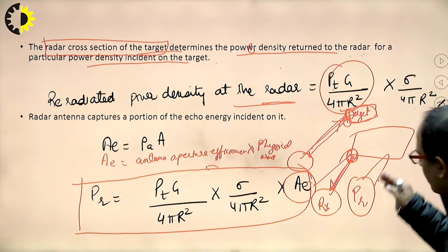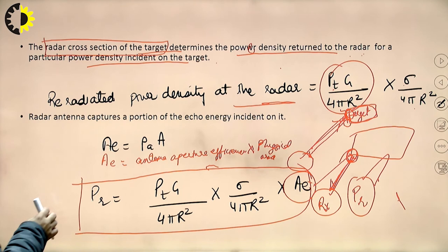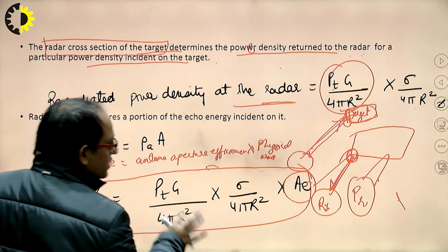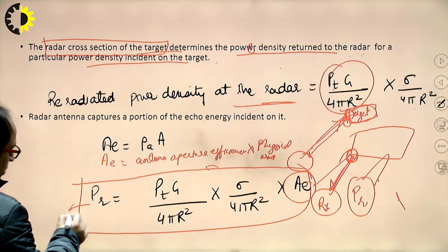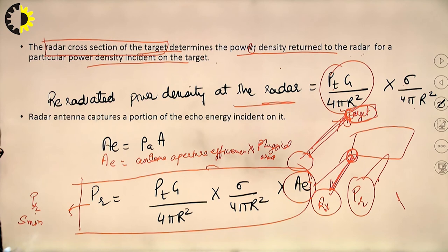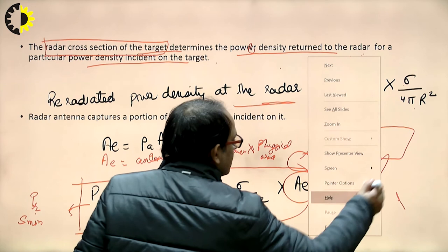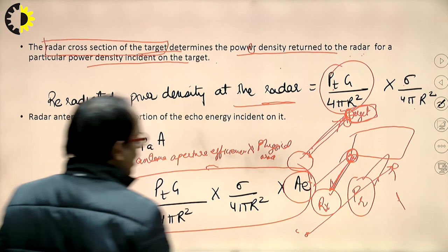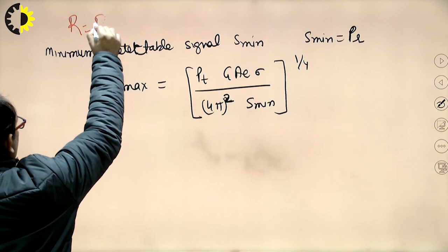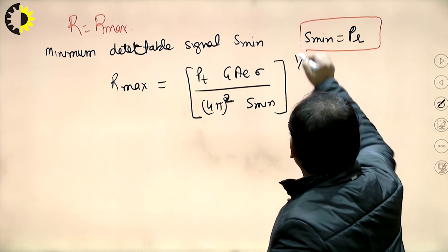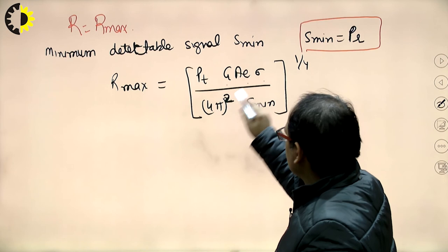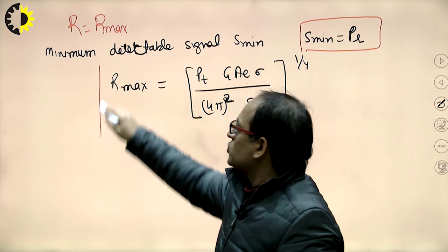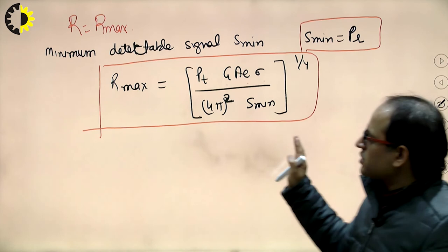The radar range equation gives the maximum range: R_max = [Pt · G · AE · σ / ((4π)² · Smin)]^(1/4). This is the basic radar range equation. Some parameters have not been considered here for exact calculation; this represents the fundamental form of the radar range equation.